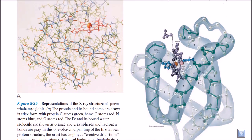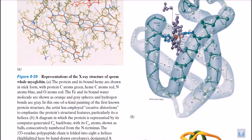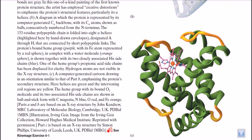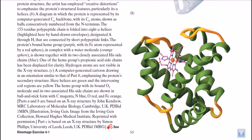Looking inside the sperm whale myoglobin structure, we can see this metal group, which is helping to arrange the structures. Metal groups carry charges that interact with polar amino acid side chains, generating electrostatic interactions. In hemoglobin, one iron with a positive charge can bind with negatively charged amino acids like aspartic acid or glutamic acid to hold the structures together. We can find the amino acid sequences inside hemoglobin where negatively charged amino acids surround that iron.